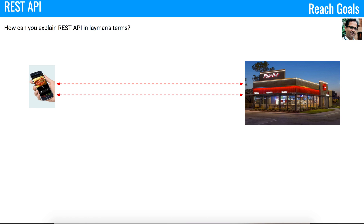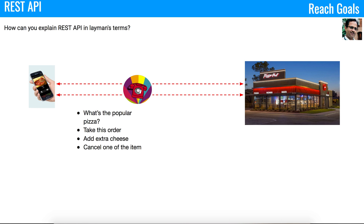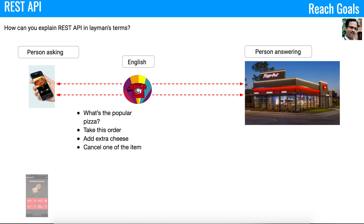You call Pizza Hut and try to establish a communication with them. You'll start to order — asking questions like what is a popular pizza, take this order, add extra cheese, and sometimes you might also ask to cancel one of the items. Here a person is talking to another person, the language used is English, so the communication is easy.